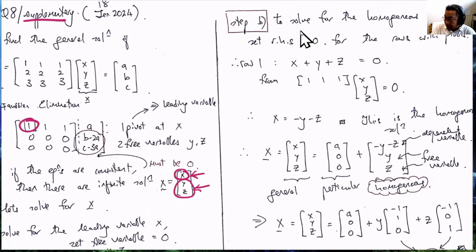Because of the free variables, we want to solve for the homogeneous solution as well. To do that, we set the right hand side to be equal to 0, and then we use the same first row equation X plus Y plus Z equals 0 and solve.